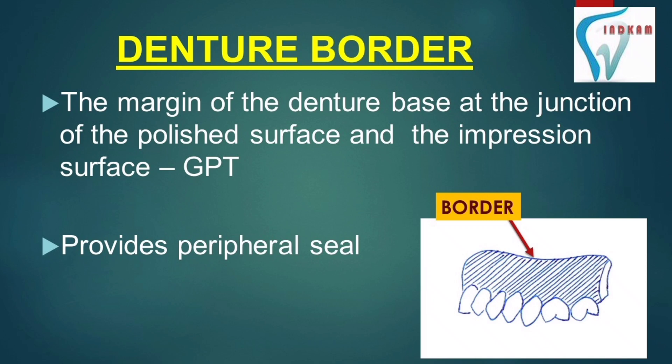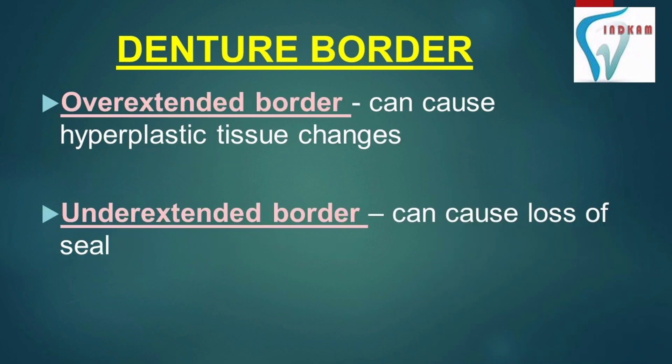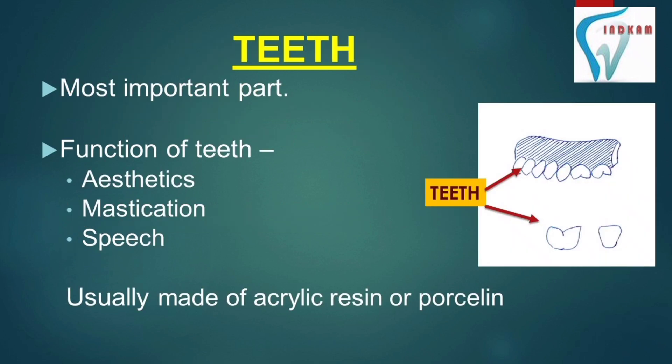The denture border is the margin of the denture base at the junction of the polished surface and the impression surface. It provides peripheral seal to the denture. If the denture border is overextended, it can cause hyperplastic tissue changes, and if it is underextended, it can cause loss of seal.